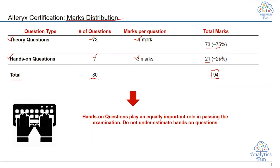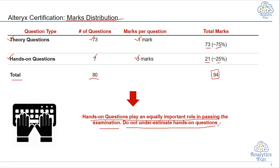Please note that even if you answer all 73 theory questions correctly — all 75% from theory — you will still not be able to pass unless you also answer the hands-on questions correctly. Hands-on questions play a very important role in passing the examination. Do not underestimate them. Some students are weak in hands-on questions and skip them — please do not do that. Practice hands-on questions along with theory questions so that you can pass confidently.